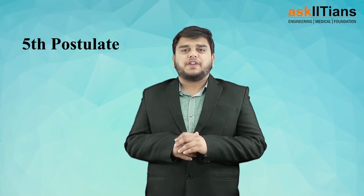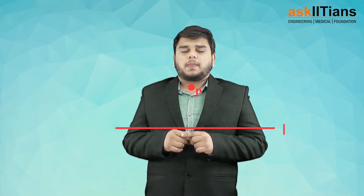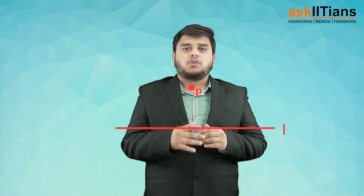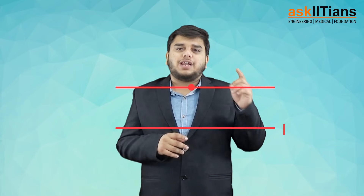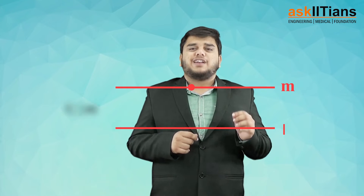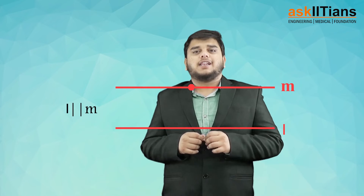The fifth postulate can also be understood this way: given a line L and a point B, we can always draw a line passing through point B that is parallel to line L. So here, line M is drawn parallel to line L.